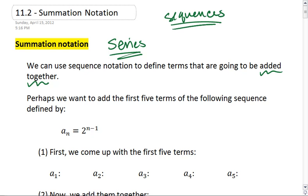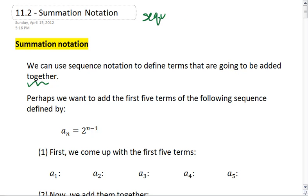Adding these terms together is what gives us a series. So a sequence might be the numbers 1, 2, 4, 8, 16, but then the series would be 1 plus 2 plus 4 plus 8 plus 16.